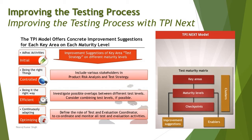On the right side of the model you have the TPI Next matrix, which includes the key areas, the four maturity levels, and checkpoints. At every interval, a checkpoint helps you verify how much you have actually delivered against your plan, since we don't always perform activities exactly as planned. Maturity levels also receive contributions from enablers – such as the coordinator and evaluation coordinator – and improvement suggestions that keep adding value to the overall maturity process.